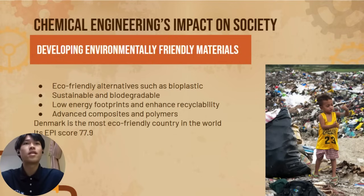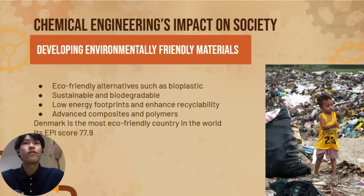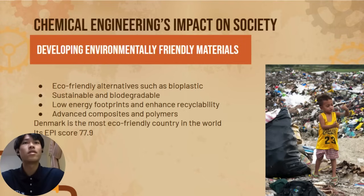The demand for sustainable and biodegradable materials is rising as society moves towards reducing plastic waste and minimizing environmental harm. Chemical engineers develop eco-friendly alternatives such as bioplastics, which are derived from renewable resources like corn starch or sugar cane. They also design materials with lower energy footprints and enhanced recyclability. Advanced composites and polymers can replace traditional materials in industries like construction and transportation, improving efficiency while reducing environmental impact. This innovation helps balance industry growth with ecological preservation.